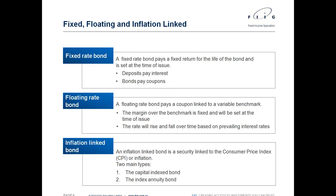When setting up a bond portfolio, it's really important to have an allocation to all three types of bonds. The easiest to recommend first is inflation-linked bonds, as most portfolios lack that 100% inflation protection. Then depending on your interest rate view, you might weight toward floating-rate or fixed-rate bonds. If you come to FIG, we would sit down with you, talk about your goals around risk, return and income, and help you build a portfolio.